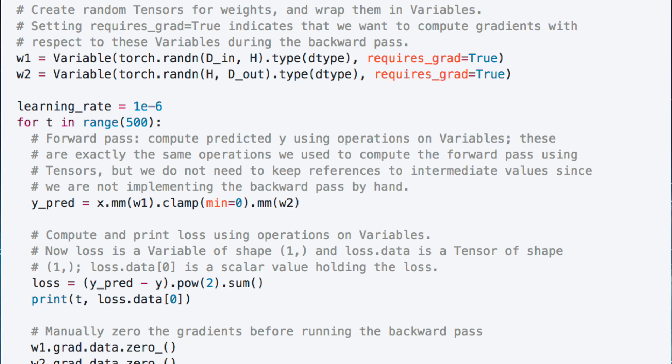The next set of variables we'll define are our weights. We'll initialize them as variables as well, storing random tensors with the float data type. And since we do want to compute gradients with respect to these variables, we'll set the flag to true.